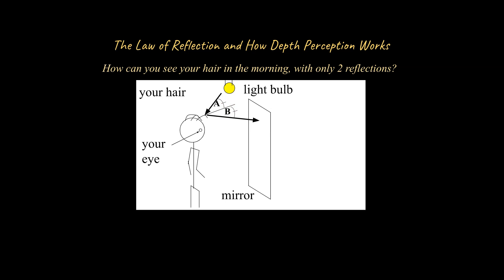Then this ray bounces off the mirror and comes into our eye, and at that point something really interesting happens. Our eyes assume that light travels in straight lines, so we trace this back with both eyes to find the true depth perception of where our hair appears to be. So if you are a foot and a half or three feet in front of the mirror, the math, geometry, and physics all work out so that the image appears to be the same distance behind the mirror.